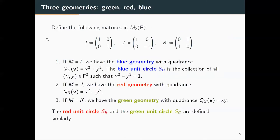We are mainly interested in three different matrices I, J, and K, each giving rise to a different geometry. If M equals I, we have the usual Euclidean geometry — the blue geometry — where the quadratic form is x² + y², and the blue unit circle is all (x,y) where x² + y² = 1. If M equals J, we have another geometry called the red geometry with its red circle. If M equals K, we have the green geometry. So we have three different unit circles: S_B, S_R, and S_G.